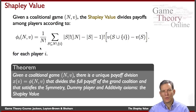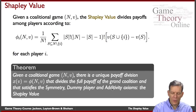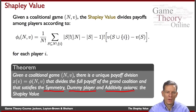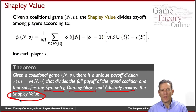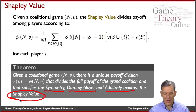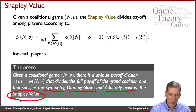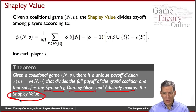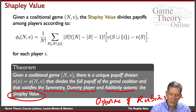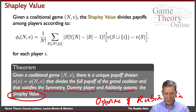The theorem states that if we look at a coalitional or cooperative game, there is a unique way to divide the full payoff of the grand coalition that satisfies symmetry, dummy, and additivity. If you put those three axioms together, there is only one way to do it — and that way is the Shapley value. There's a fairly elegant and intuitive proof to this; you can find it in a number of places, including a nice free online book by Osborne and Rubinstein.